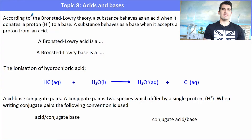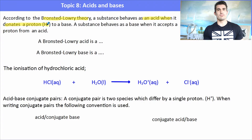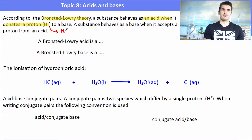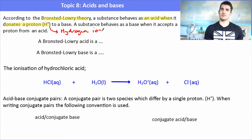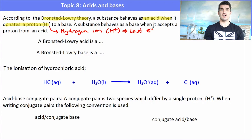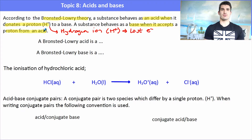A Brønsted-Lowry acid is a proton donor, and a Brønsted-Lowry base is a proton acceptor. A proton is a hydrogen that has lost its electron, so it's referred to as a proton or hydrogen ion. Something that donates a proton acts as an acid, and something that receives a proton acts as a base.